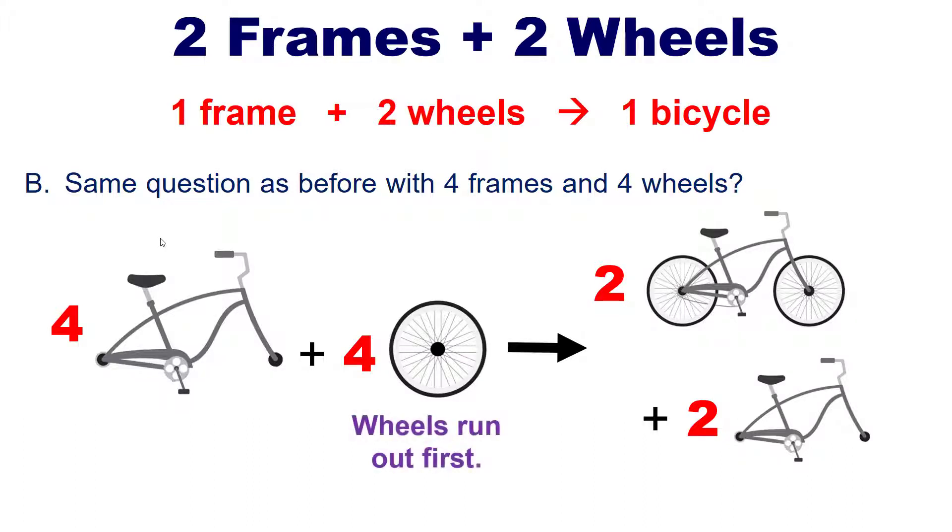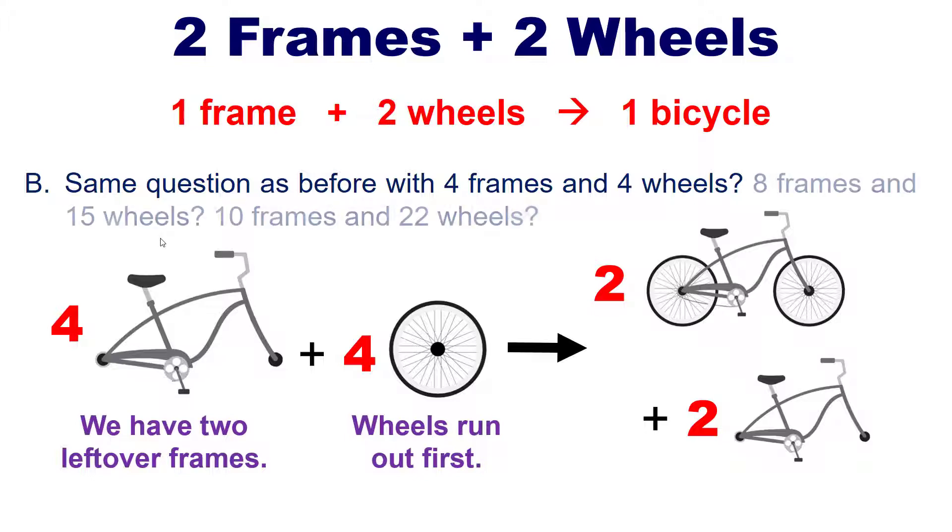In other words, your wheels run out first and are therefore your limiting reactant. You have two leftover frames, therefore your frames in this scenario are your excess reagent. I invite you then on your own to contemplate and answer the same question in two other scenarios: what if you had eight frames and 15 wheels, and what if you had 10 frames and 22 wheels?